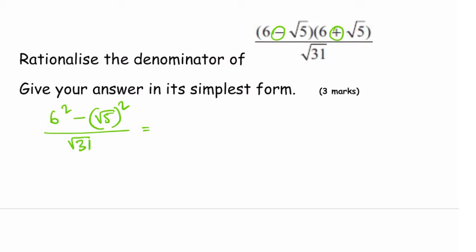So we have 6 squared minus square root of 5 squared over root 31. Let's simplify it. 6 squared is 36, and square root of 5 squared—the square and the root cancel out—so we have just 5 over root 31. 36 minus 5 is 31 over root 31.